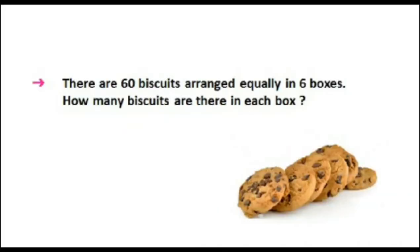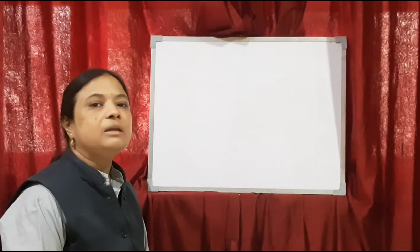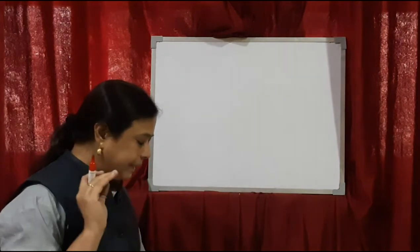Now next sum. There are 60 biscuits arranged equally in 6 boxes. How many biscuits are there in each box? In division we write down the total and find out one thing. So 60 biscuits are there in 6 boxes, and we have to find out how many biscuits are in one box. Let's make the statement. Here also two things are given: number of biscuits and number of boxes.